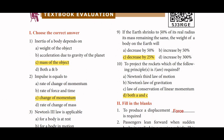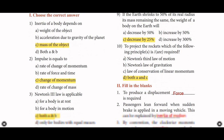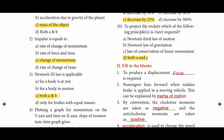Ninth: If the Earth shrinks to 50% of its real radius with mass remaining the same, the weight of the body on Earth will be decreased by 25%. Tenth: To project a rocket, the principles required are Newton's third law, Newton's law of gravitation, and law of conservation of linear momentum.